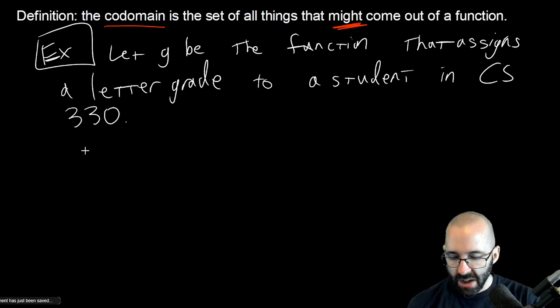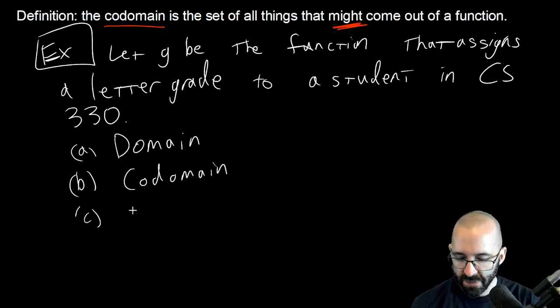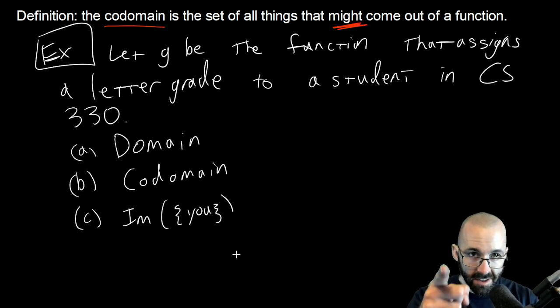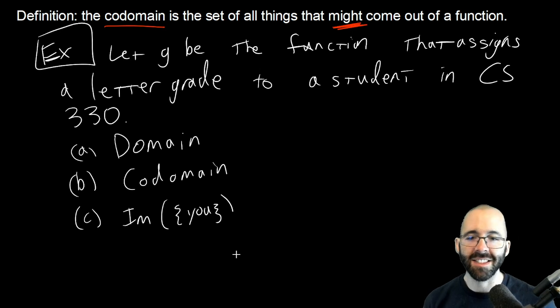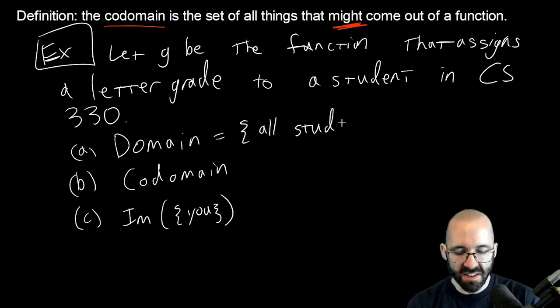I want you to find the domain, the codomain, and a bit of a trick question maybe: what is the image of the set that contains the student you? Whoever you are as a student, what is your image? Pause the video and write down what your domain, codomain, and image of this set are. The domain is going to be all the possible inputs, so it's just going to be the set of all the students.